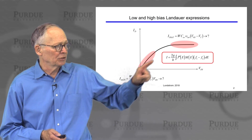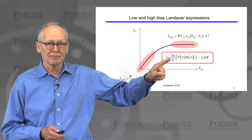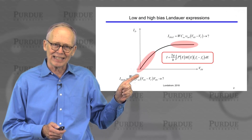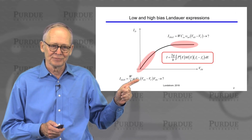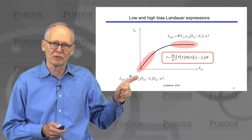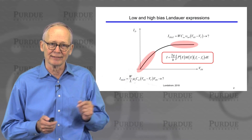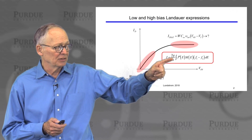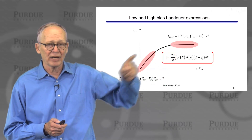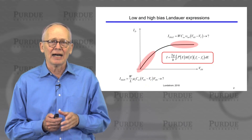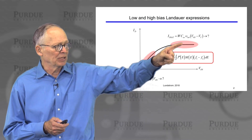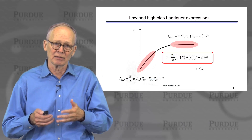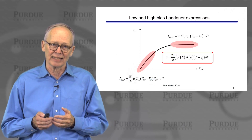Our goal is to use this general expression and simplify it so that we can understand how the classical conventional expression for the linear region current of a MOSFET generalizes to nanoscale MOSFETs. We will also discuss how we simplify this expression for high drain biases so that we can see how the saturation current generalizes from the traditional model to a model that is more physically valid at the nanoscale.